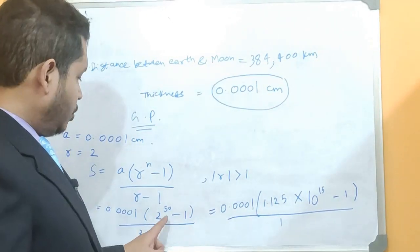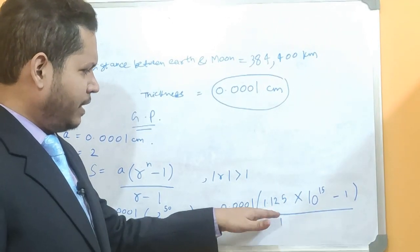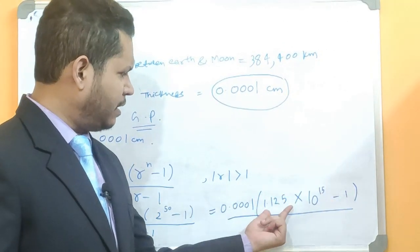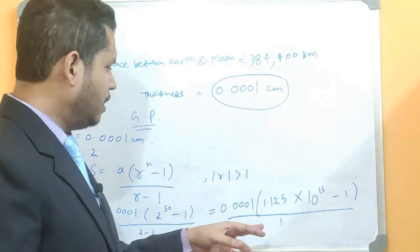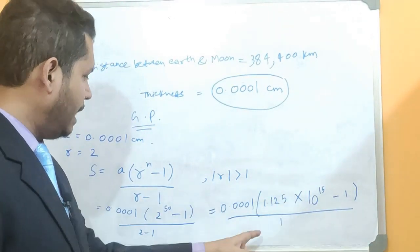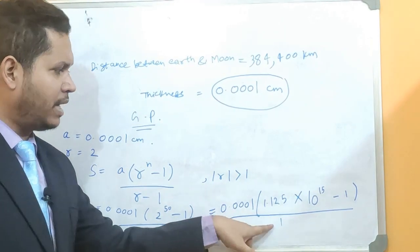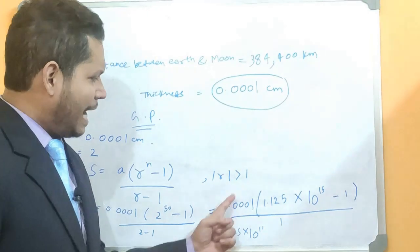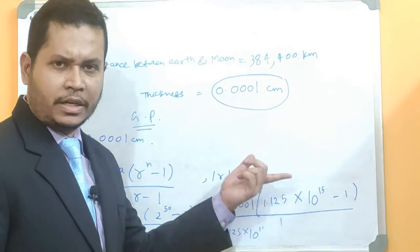So if you calculate then 2 to the power of 50 will come somewhere near to 1.15. Now it's a big value, right? So I am just keeping the first three decimal places. So it's 1.125 into 10 to the power of 15 minus 1 and whole divided by 2 minus 1, which is 1. Okay? So if you calculate...